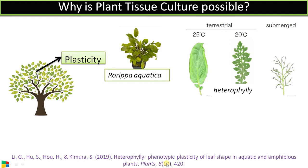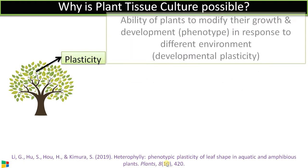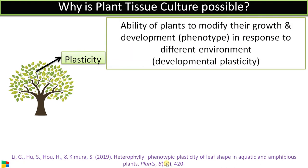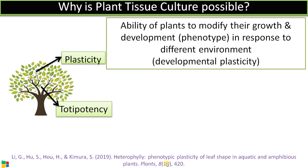Plasticity can be defined as the ability of plants to modify their growth and development in response to a changing environment. The second important quality is totipotency, which is the genetic potential of a plant cell to give rise to a complete plant.